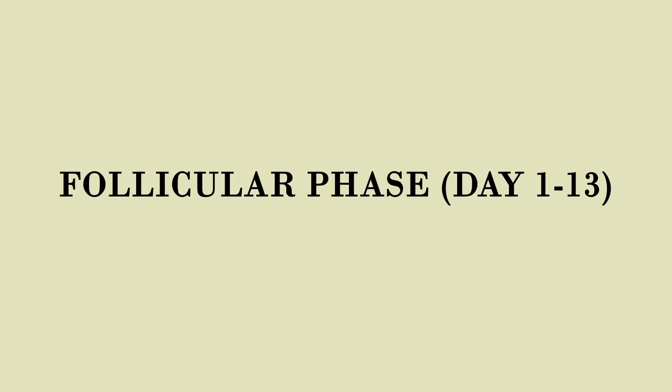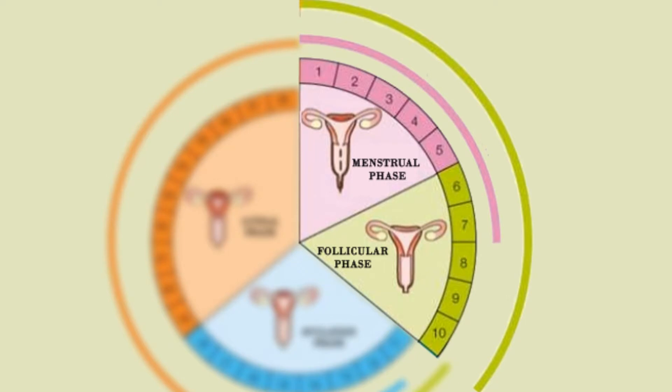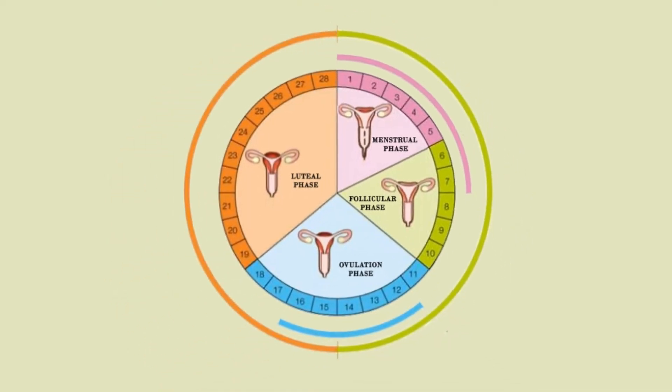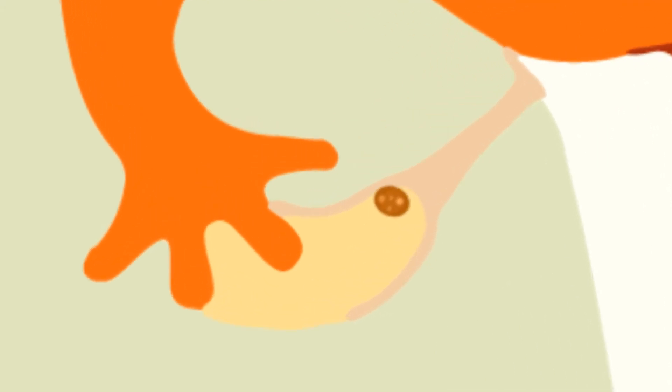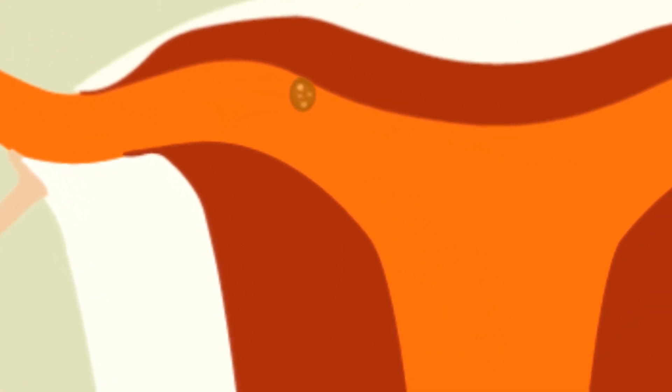Follicular phase, day 1 to 13. This phase also begins on the first day of menstruation but lasts till the thirteenth day of the menstrual cycle. The pituitary gland secretes a hormone that stimulates the egg cells in the ovaries to grow. One of these egg cells begins to mature in a sac-like structure called a follicle. It takes 13 days for the egg cell to reach maturity.